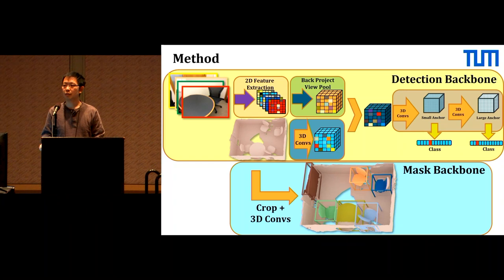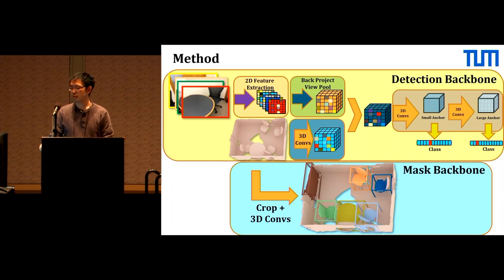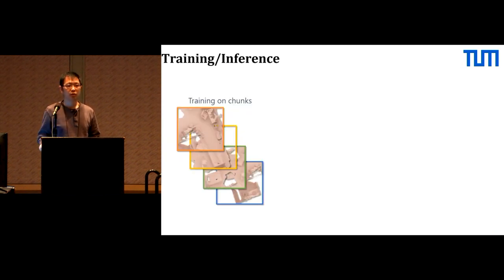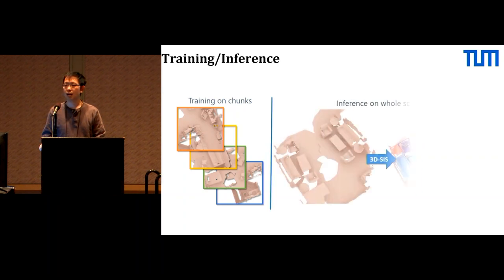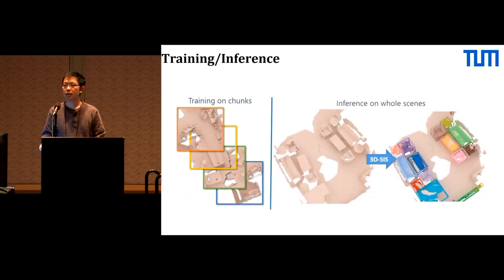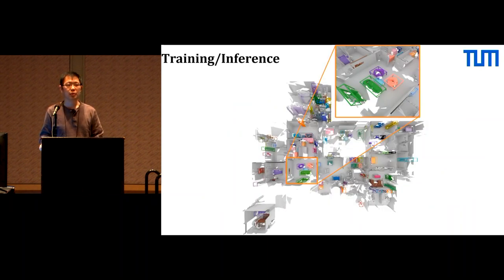Finally, we predict per-voxel instance masks using a mask backbone composed of a series of 3D convolutions, giving us the final 3D instance segmentation result. Our network is fully convolutional, so we can train on small chunks and test on the whole scan in a single shot. Large scenes can also be processed at interactive rates.